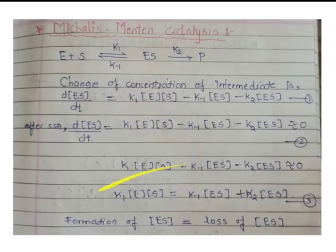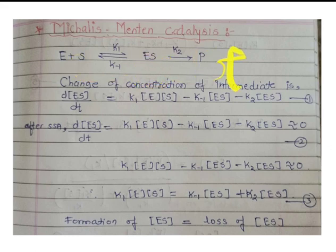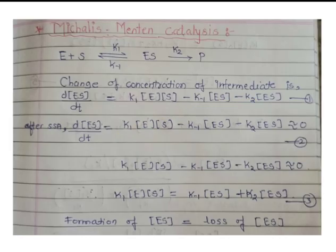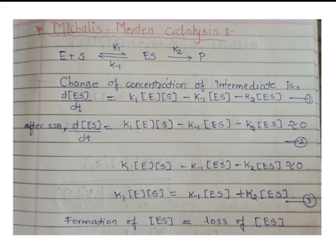Now we will solve the Michaelis-Menten equation. The same reaction is taken: enzyme plus substrate gives complex ES, which gives product while enzyme remains. We need to find the intermediate from this equation. ES is the reactants side, P is the product, and in between there is the complex of enzyme and substrate. So ES is the intermediate.